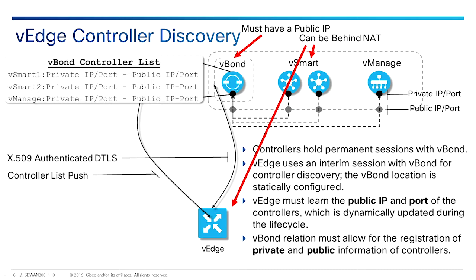The V-Bond has to have a public IP and must be reachable by all devices. The V-Smart and the V-Edges can be behind NAT. They'll register to V-Bond, and then V-Bond will make sure that we have connections back to them.